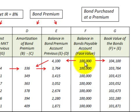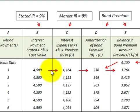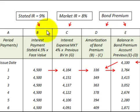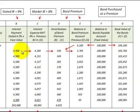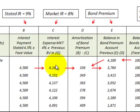In this example we have a $100,000 face value bond purchased for $104,100, giving us a bond premium balance of $4,100. The regular interest payment is $4,500, based on a stated rate of 9% per year. To determine that amount: 9% times $100,000 equals $9,000, and since payments are semi-annual we divide by two to get $4,500.